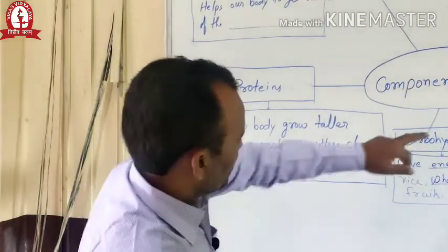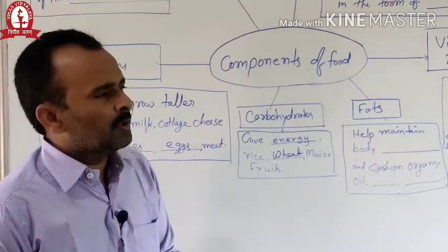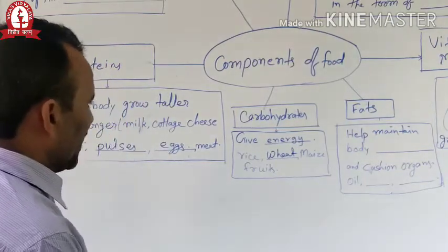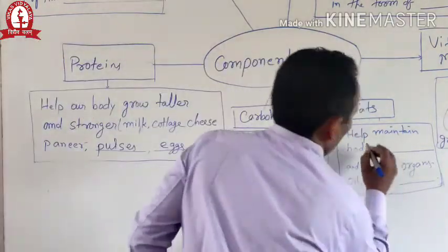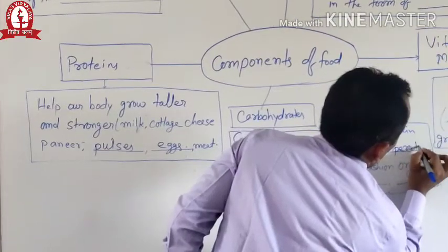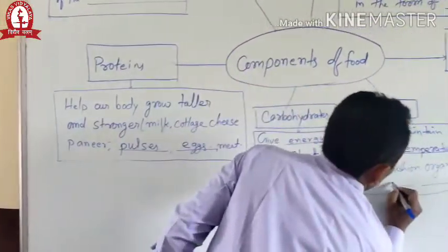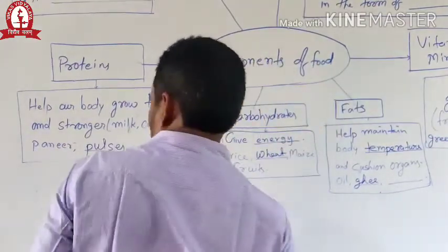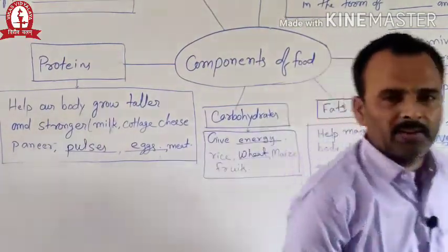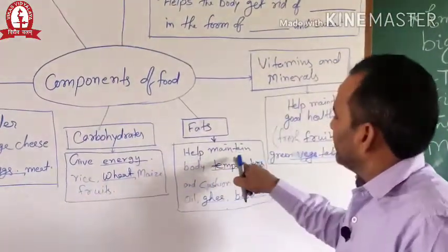Fat is also an important nutrient for our body. We need a small amount of fat to maintain our body temperature. Oil, ghee, and butter are the food items that give us fat. It is important for our body to maintain our body temperature.